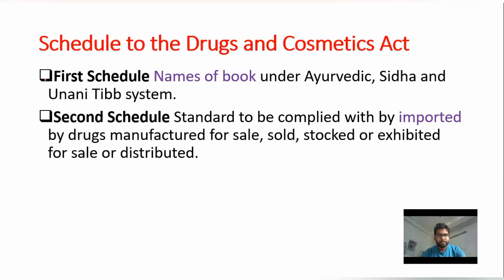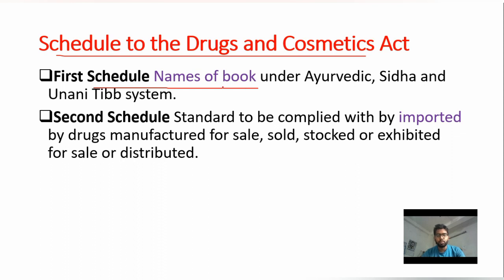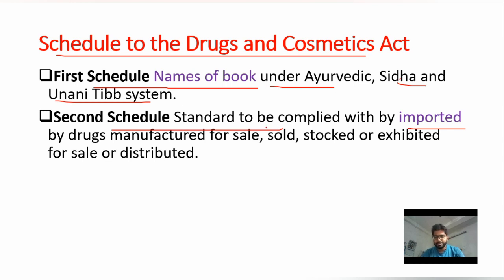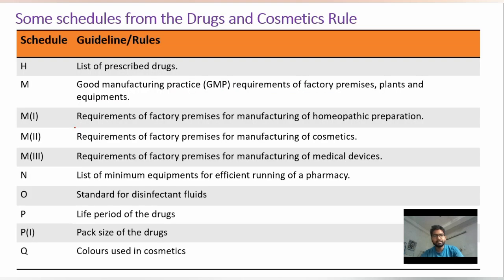The Drug and Cosmetics Act has only two schedules. The First Schedule relates to standard or reference books related to the Ayurveda, Siddha, and Unani systems. The Second Schedule relates to imported drug standards — specifically, the standards to be maintained by importers or manufacturers from different countries when importing drug substances into India.